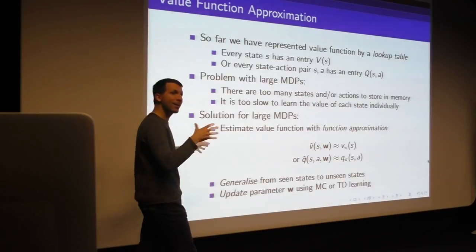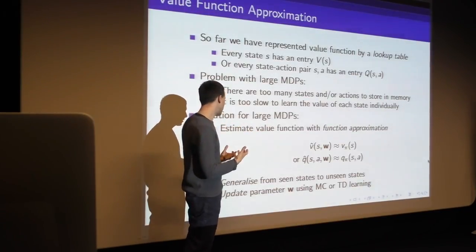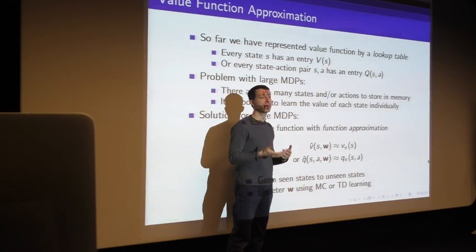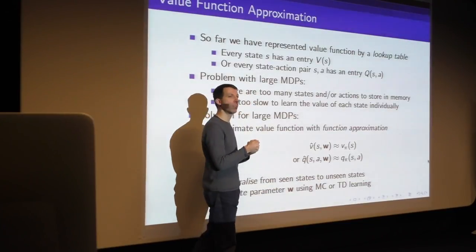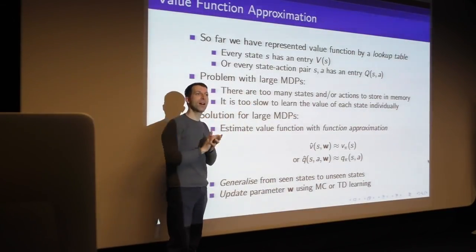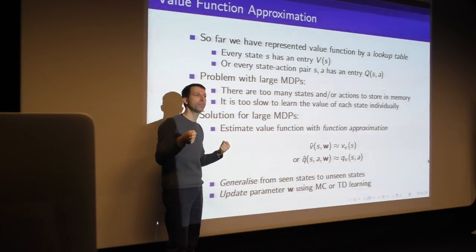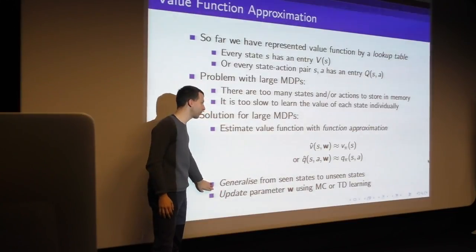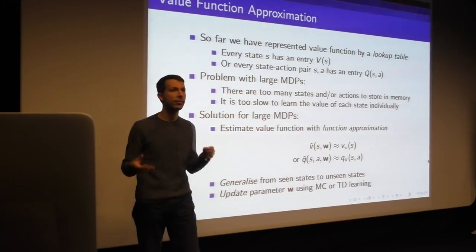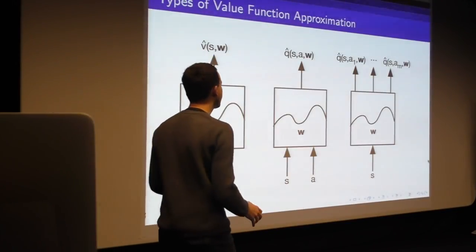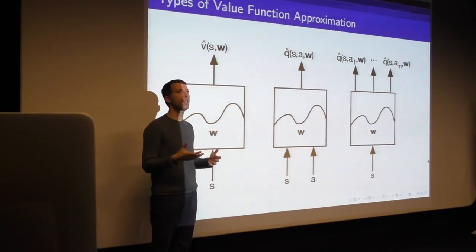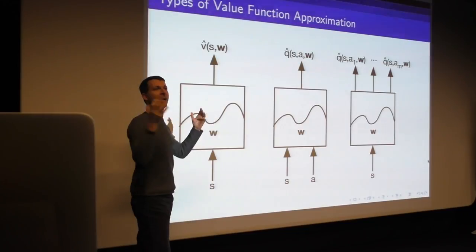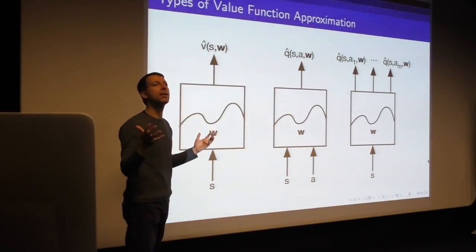We'll update the parameter vector — the weights of our neural network — using the methods from previous lectures: Monte Carlo learning, TD learning, TD-lambda, and so forth. These give us targets for fitting our function approximator so we can learn the right value function.